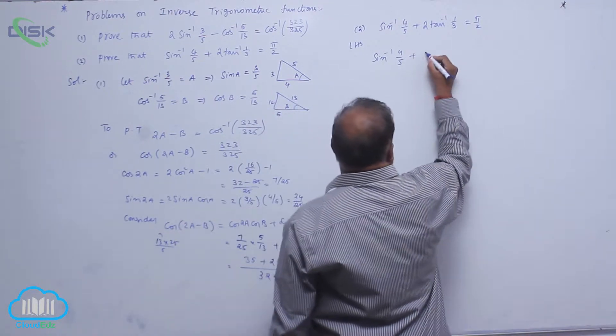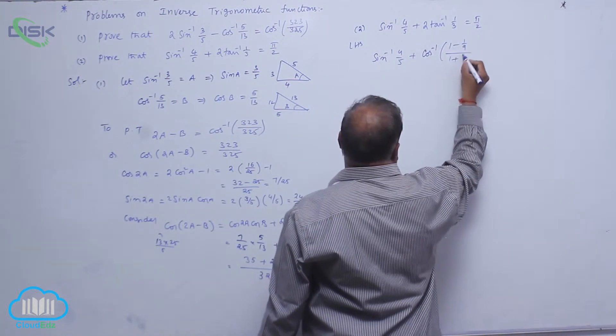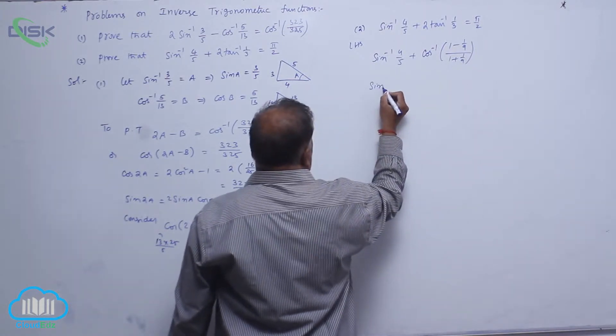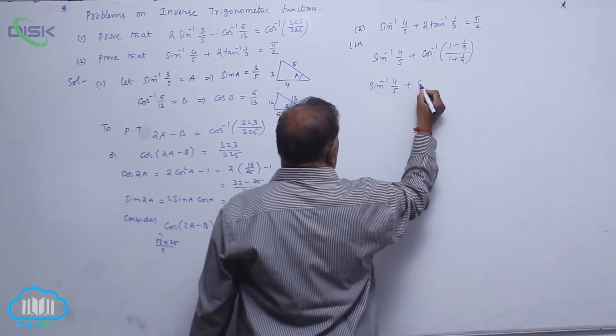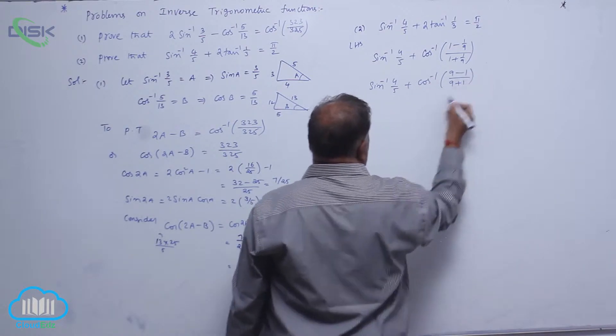This is cos inverse 1 minus 1 by 9 by 1 plus 1 by 9, sin inverse 4 by 5, cos inverse 9 minus 1 by 9 plus 1.